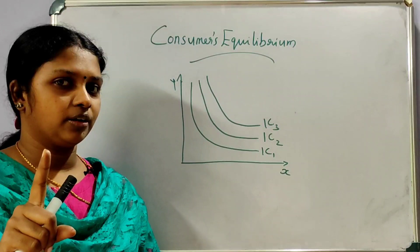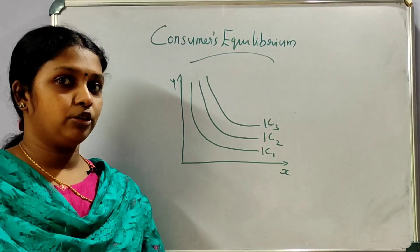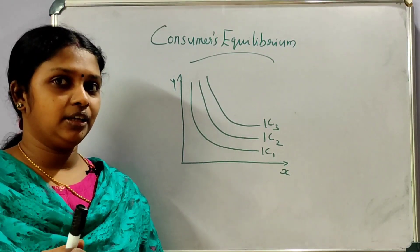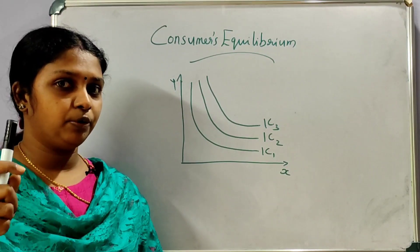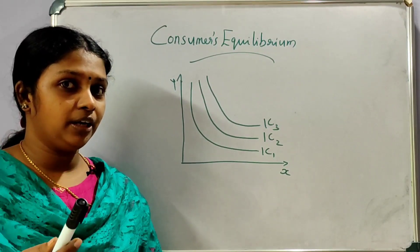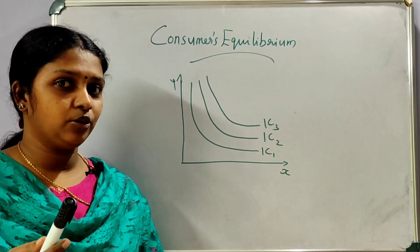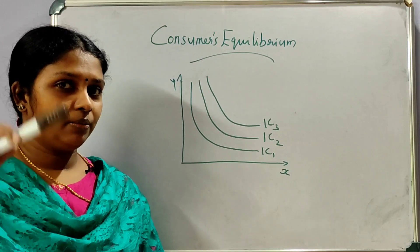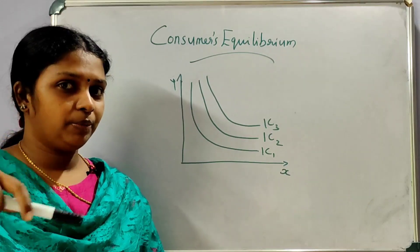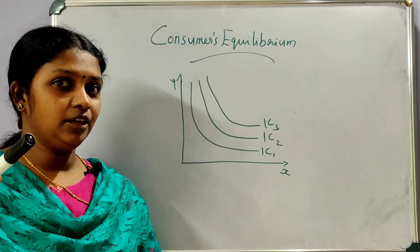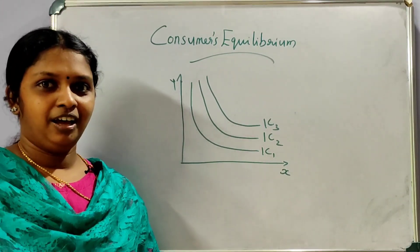A rational consumer — what is the most important thing? That is a monotonic preference.